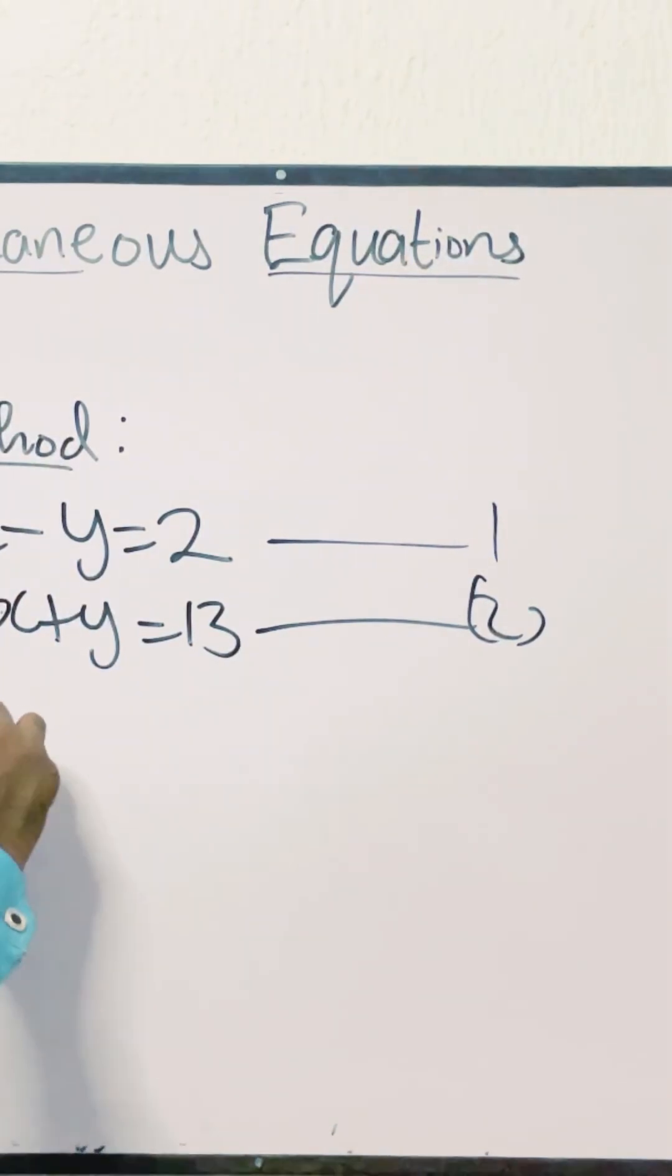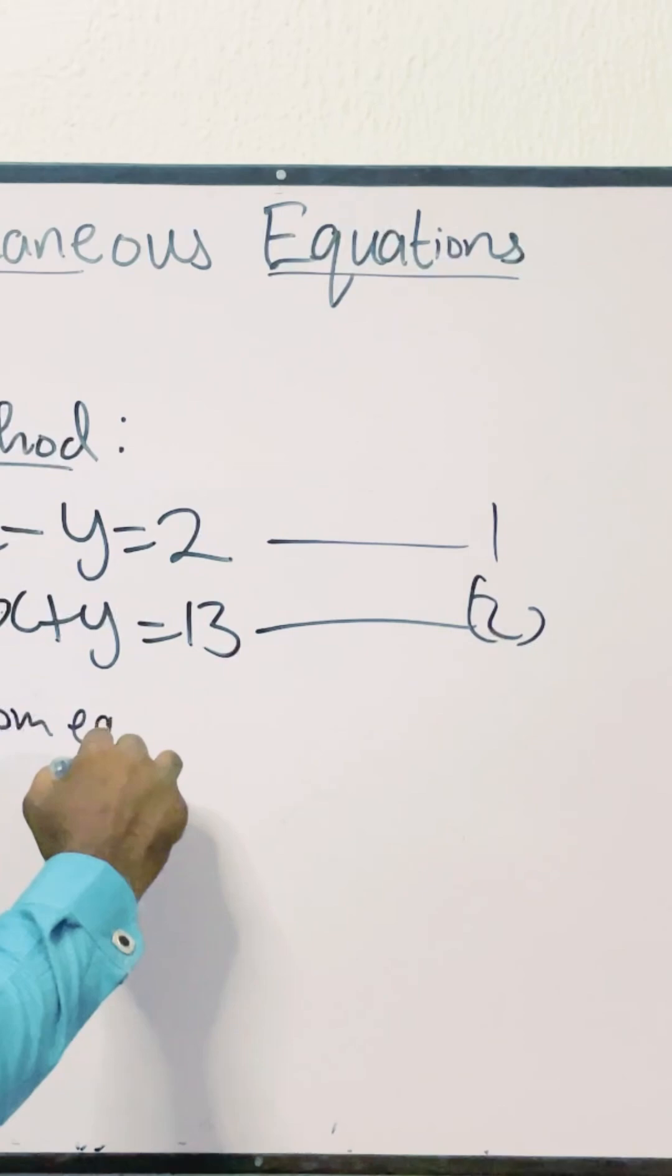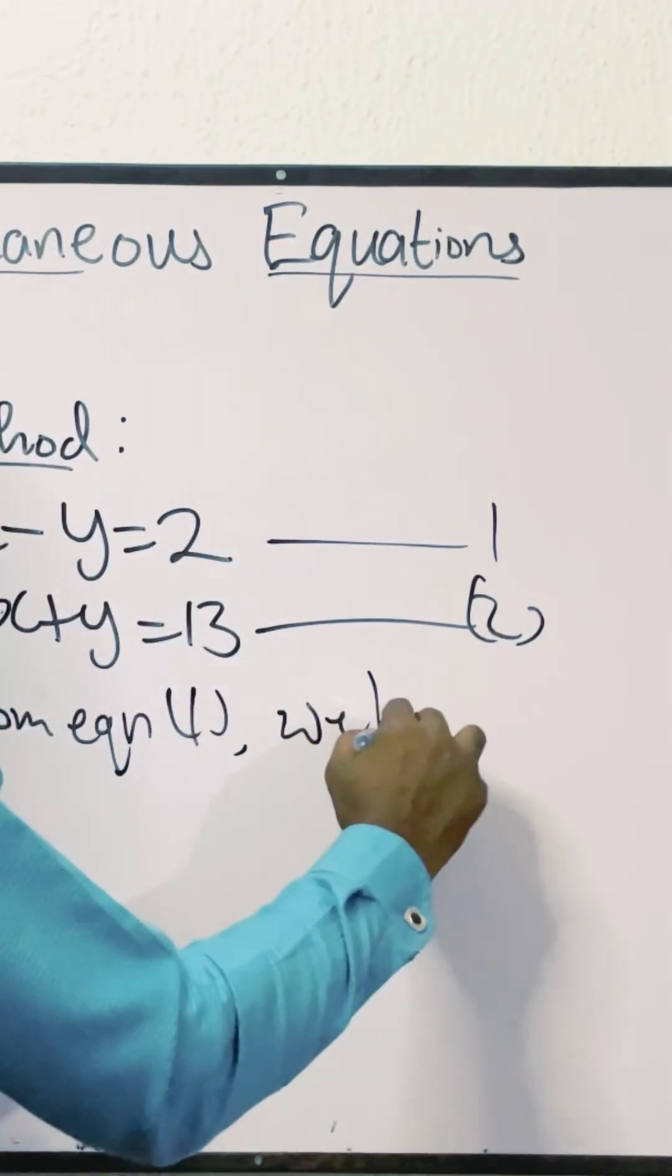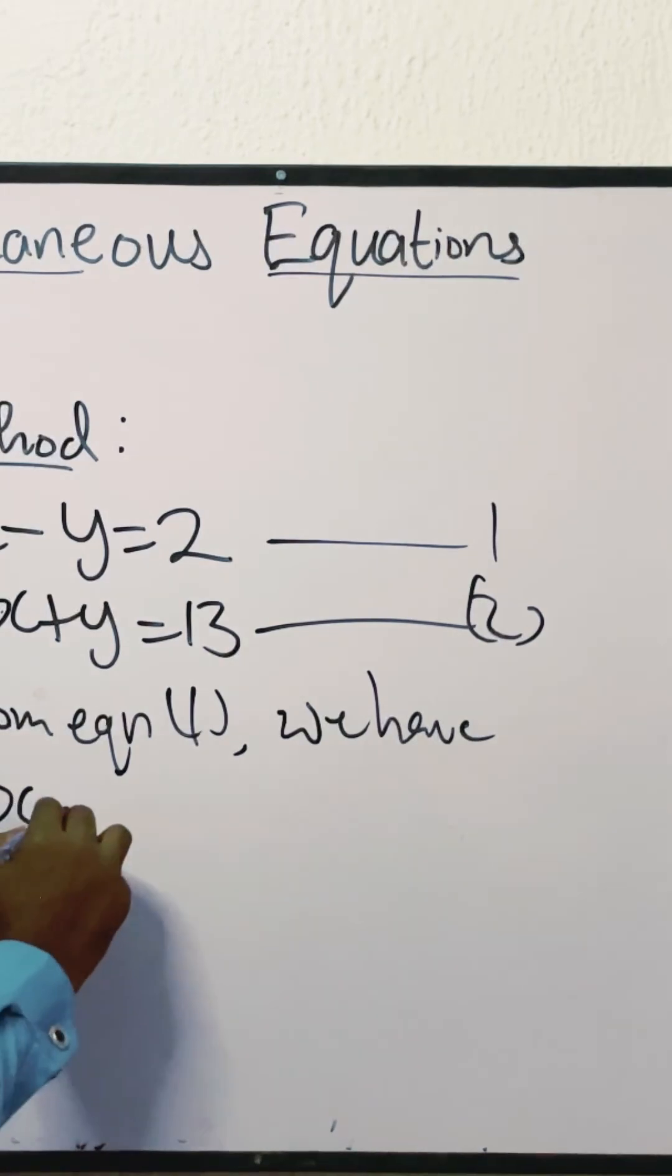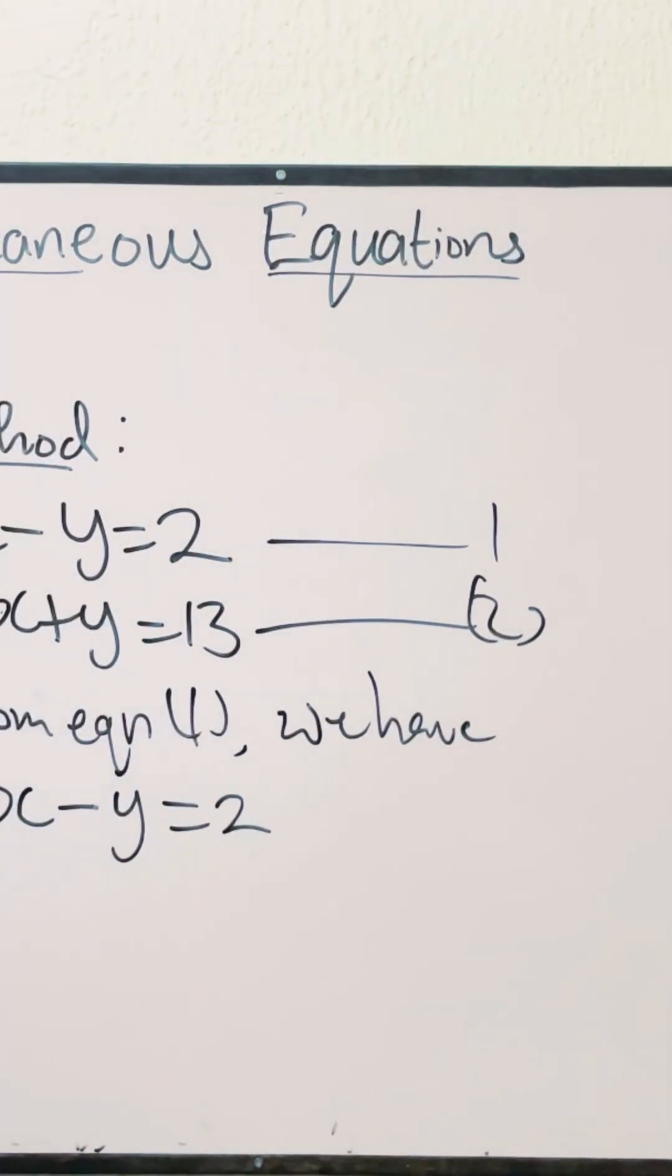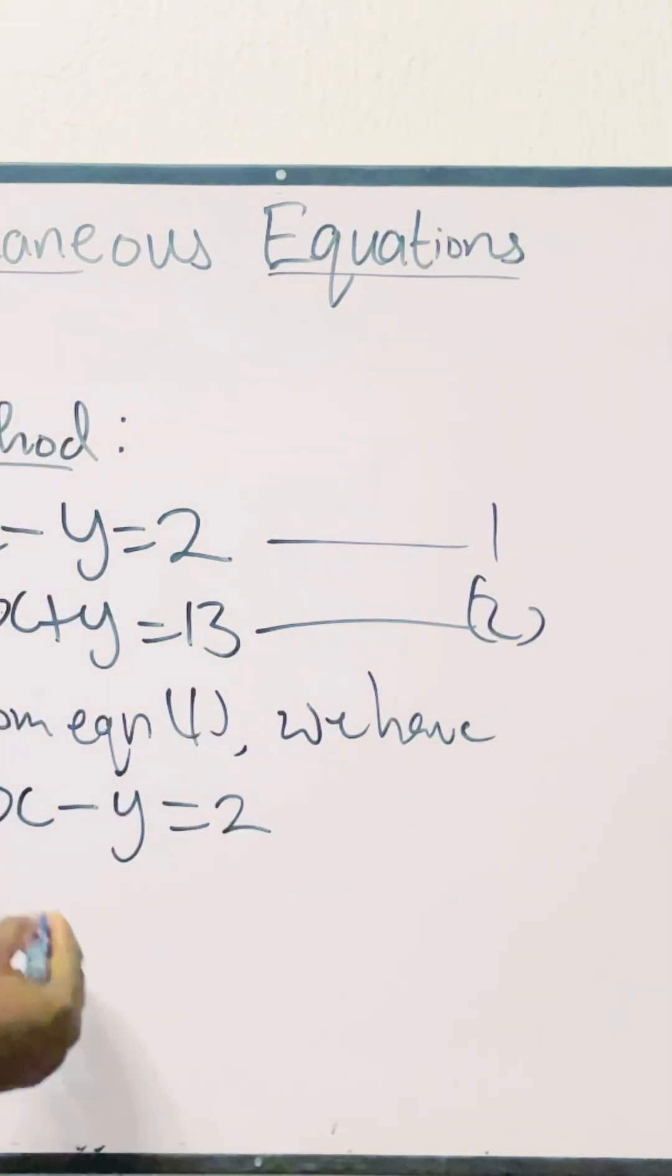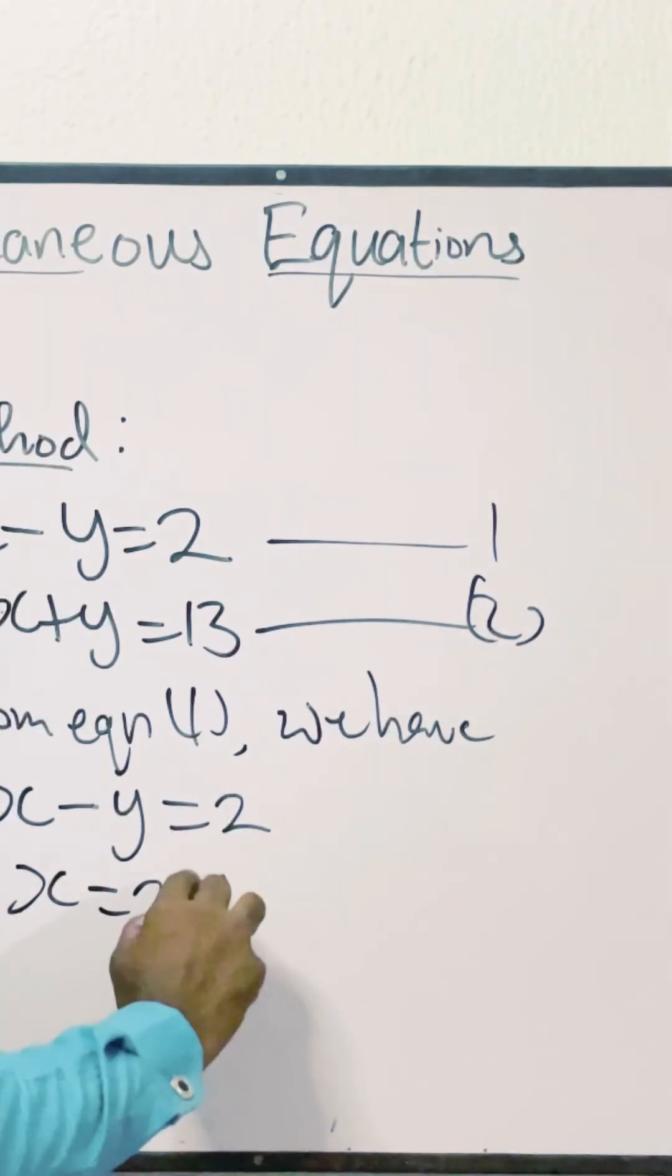From equation 1, we have x minus y equals 2. If we're making x the subject, we transfer minus y over to the other side and that becomes x equals 2 plus y.